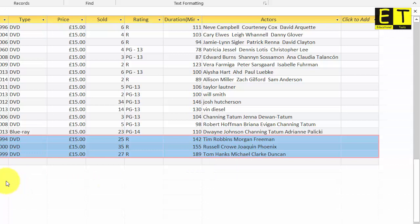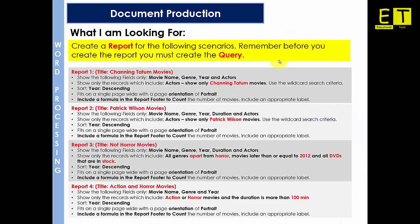The next step is to create our first query and report. Create a report for the following scenario: the title needs to be 'Channing Tatum Movies', showing only the fields Movie Name, Genre, Year, and Actors. Show only records which include Channing Tatum — use the wildcard search criteria. Sort by year descending. It should fit on a single page wide with portrait orientation. Include a formula in the report footer to count the number of movies, and include an appropriate label.